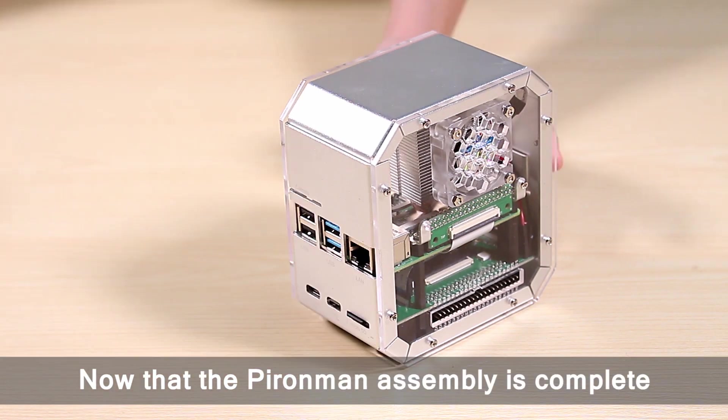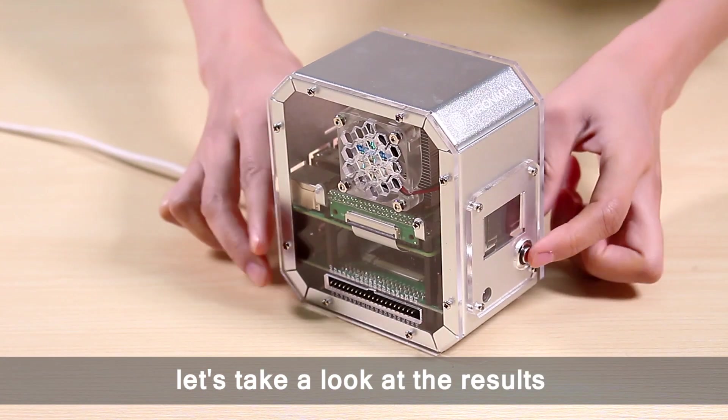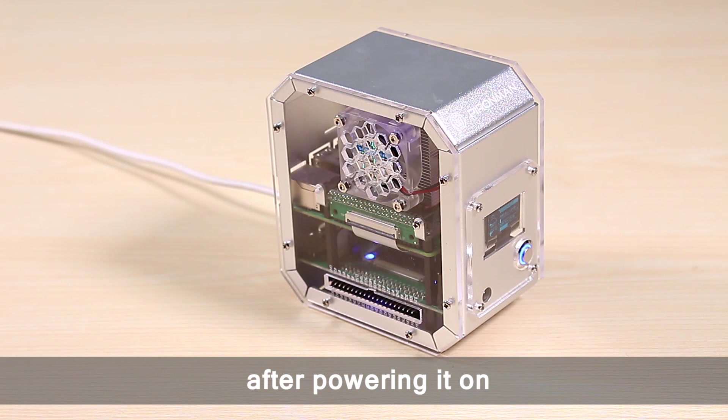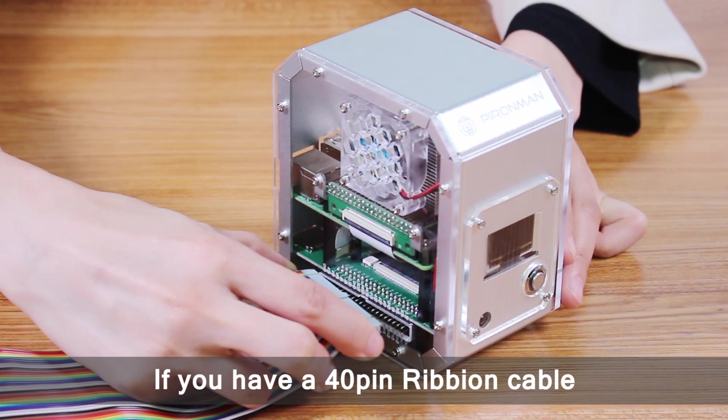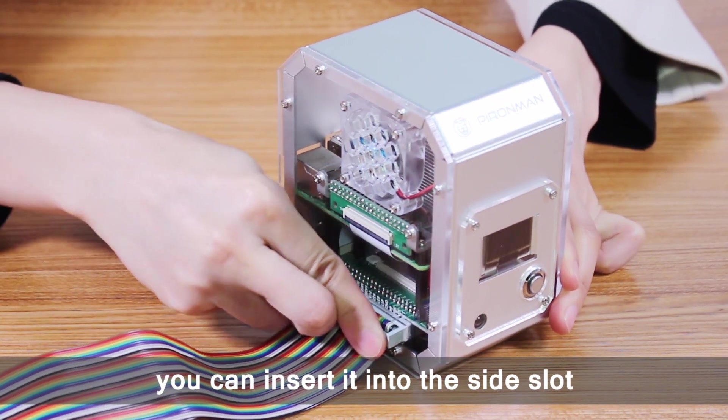Now that the Pyramin assembly is complete, let's take a look at the results after powering it on. If you have a 40-pin ribbon cable, you can insert it into the side slot.